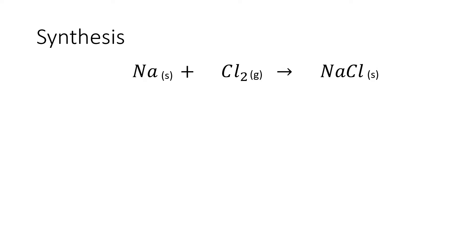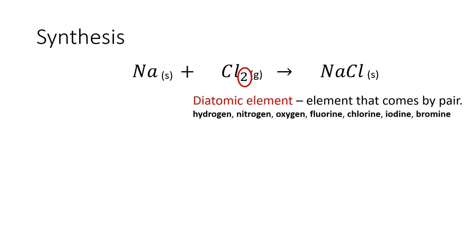For the reaction of sodium and chlorine forming sodium chloride, sodium is in solid form while chlorine is in gas form, and their product sodium chloride is also a solid. Chlorine has a subscript of 2, meaning chlorine is a diatomic element — an element that always comes in pairs, like twins.